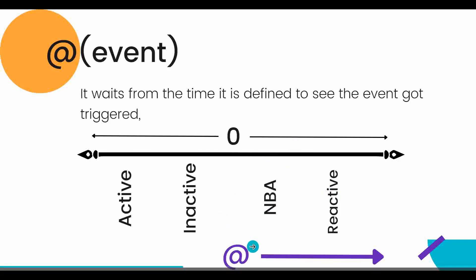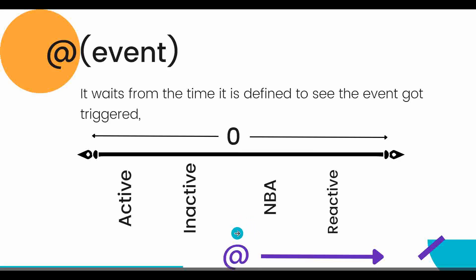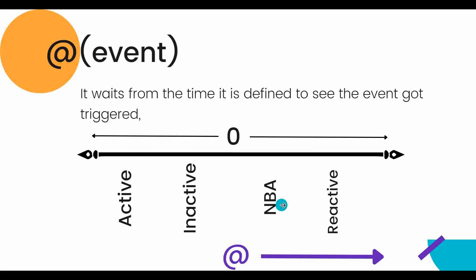To put it another way, `@event` only starts watching from the moment it is defined. If the event triggered before that point, it will not catch it. We will see this difference in coding: with blocking triggering, `@event` will not be able to catch the event, but with non-blocking triggering, `@event` will catch the event in the same time slot.